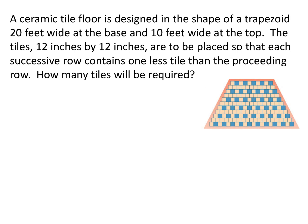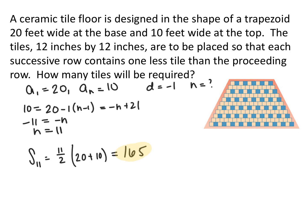A ceramic tile floor is shaped like a trapezoid — 20 feet wide at the base and 10 feet wide at the top. The tiles are 12 by 12 inches, with each successive row containing one less tile. Since each tile is one foot, the bottom row has 20 tiles (a sub 1 equals 20) and the top row has 10 (a sub n equals 10), with common difference minus 1. Solving the explicit formula for n gives 11 rows. The sum is (11 over 2) times (20 plus 10), giving 165 tiles total.